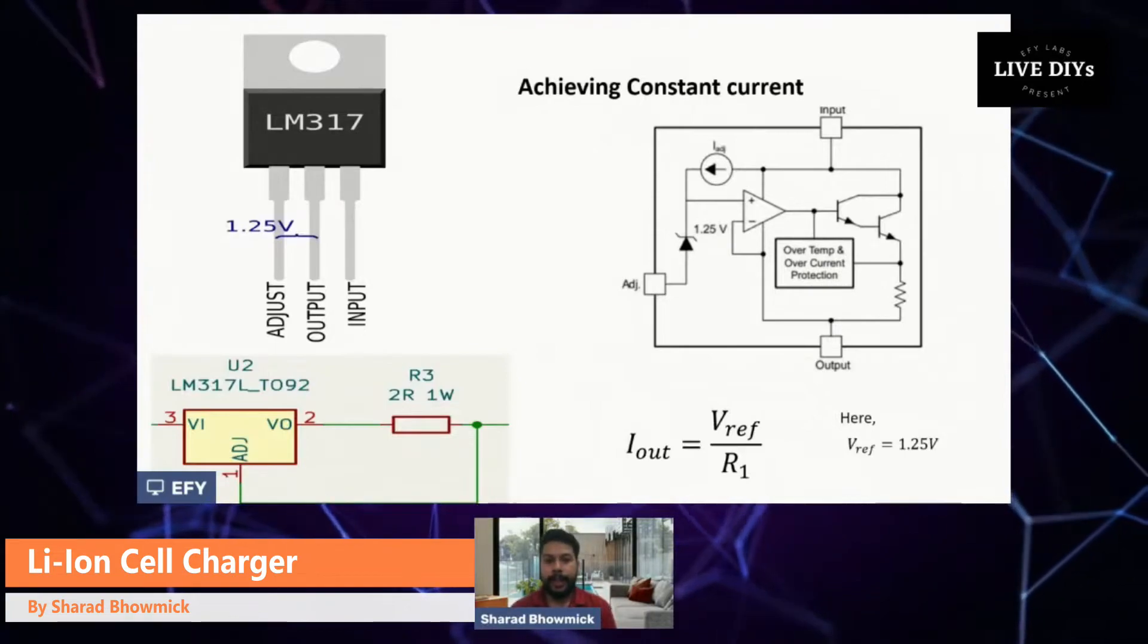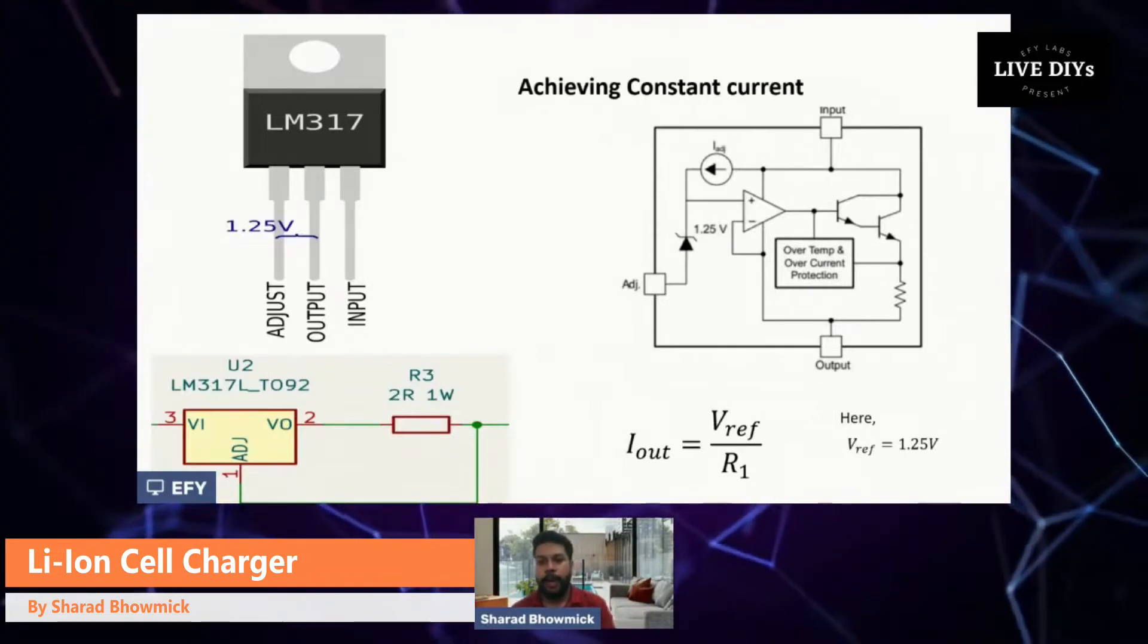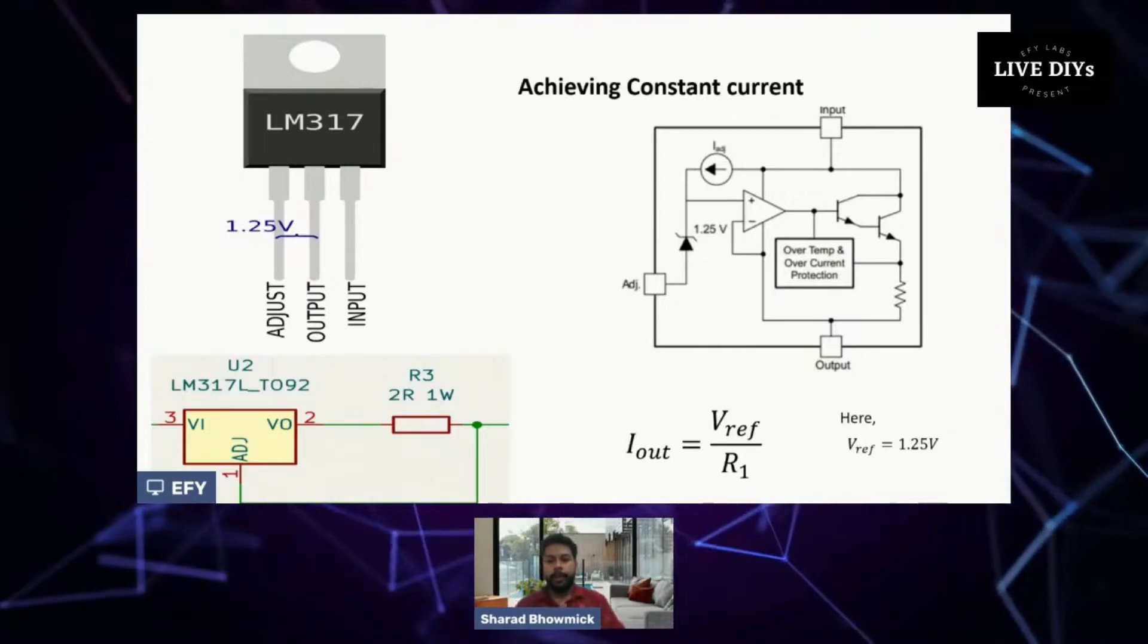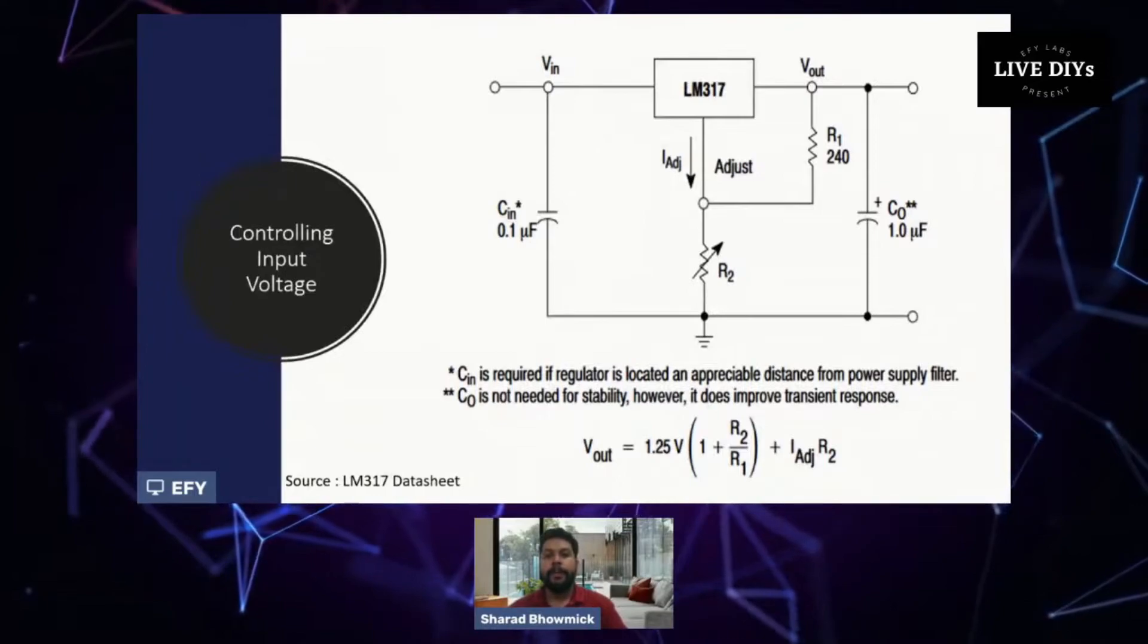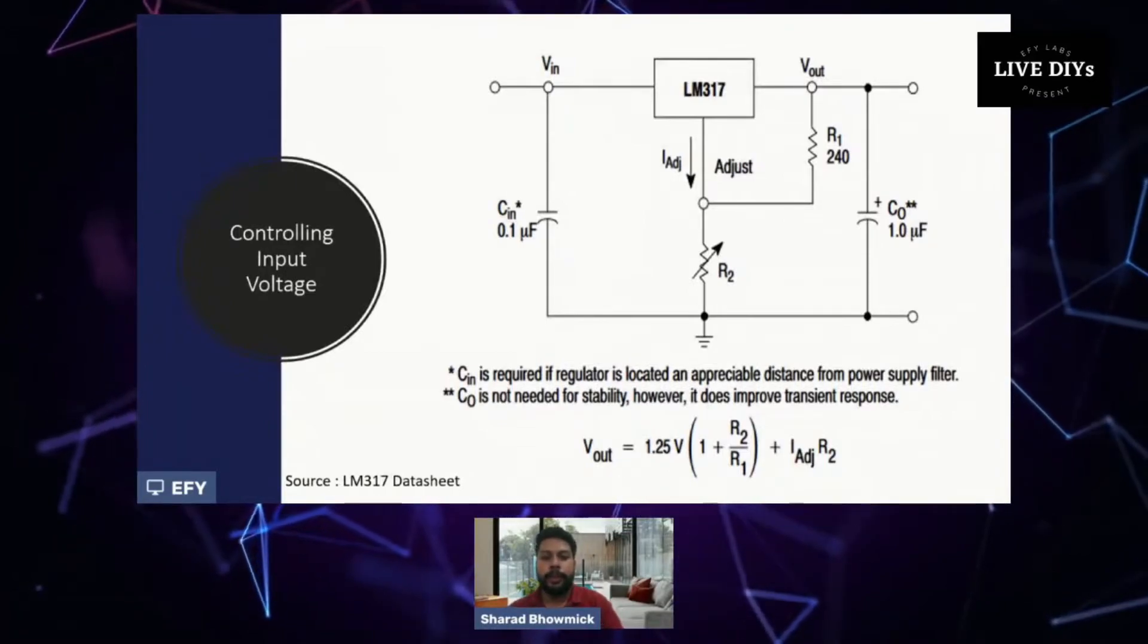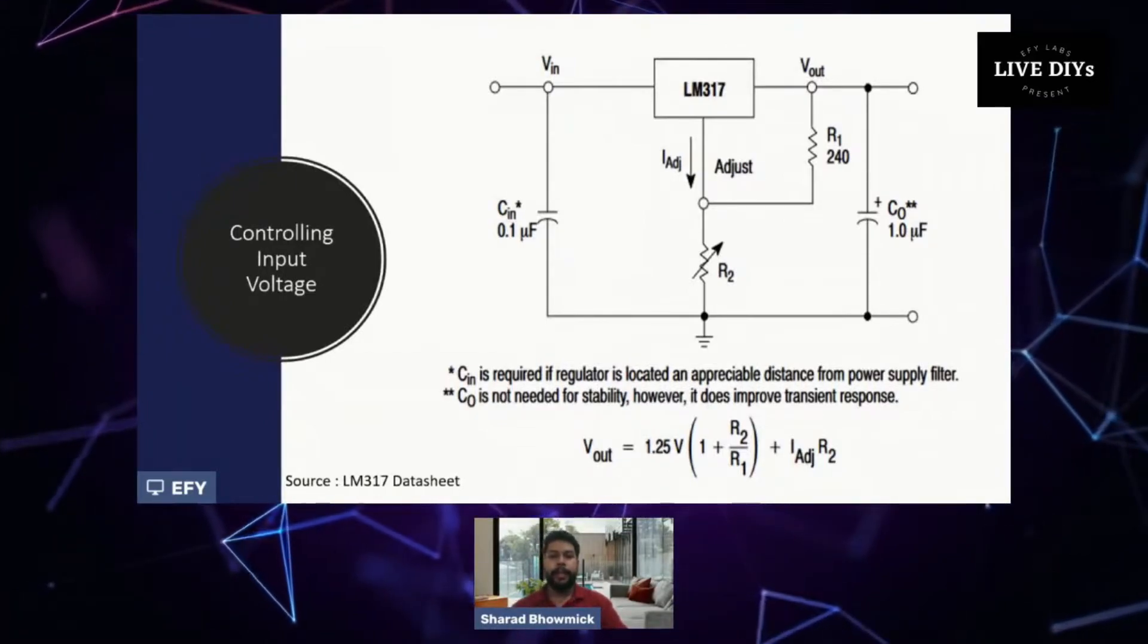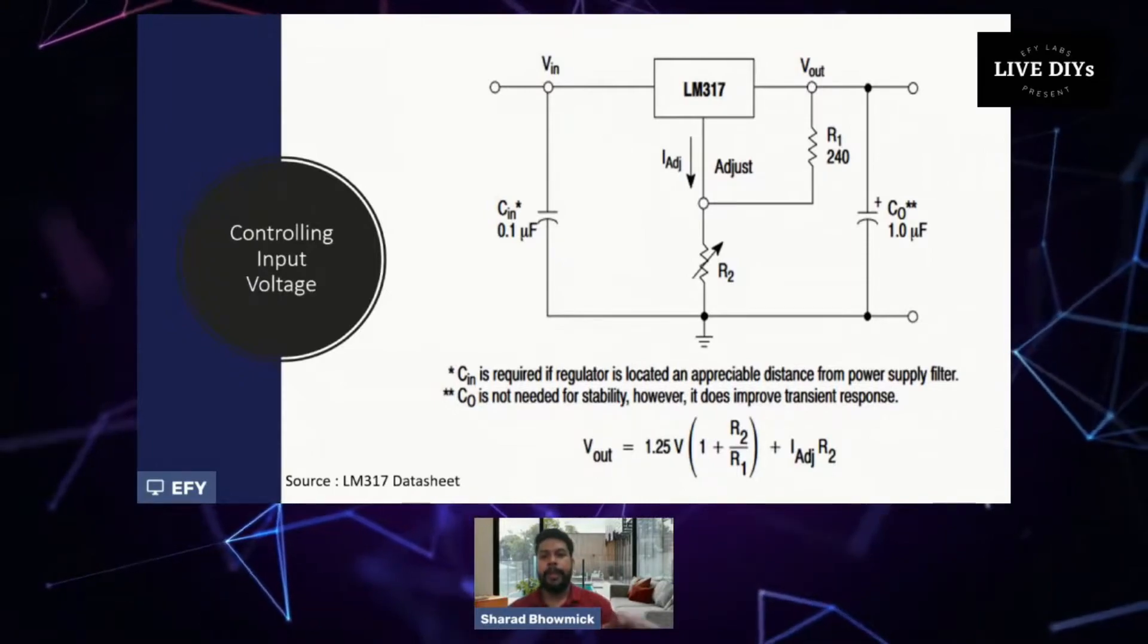The next thing to improve a circuit is to have a constant voltage limiter. For that, LM317 is again used and we can use the circuit as shown in the figure and we can easily calculate the amount of voltage we want.